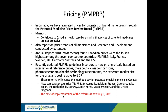In Canada, we have regulated prices for patented or brand-name drugs through the Patented Medicine Prices Review Board, known as the PMPRB. Note that price and cost mean two different things in this context. The price of a drug is essentially the maximum amount that a manufacturer can sell the drug for — they are free to sell it for less, but not more. That's essentially the function of PMPRB.